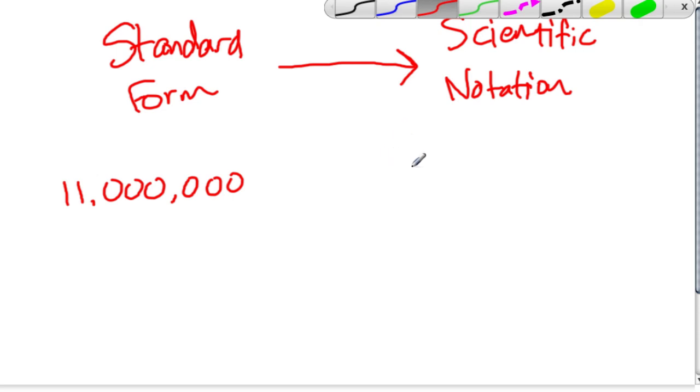And we want to write it in scientific notation. We don't want to change the number, we just want to write it in a different way. The answer here is going to be 1.1 times 10 to the 7th. But let me break this down.